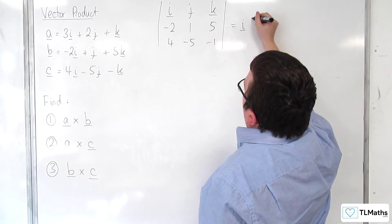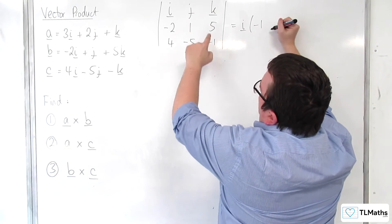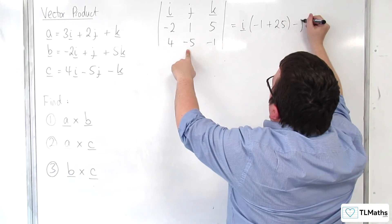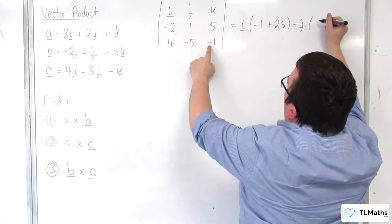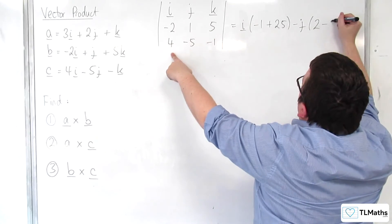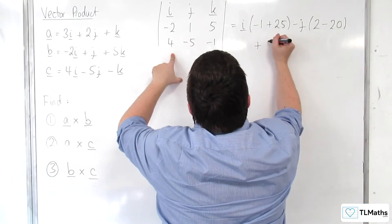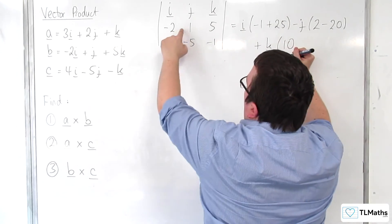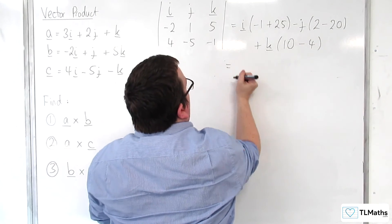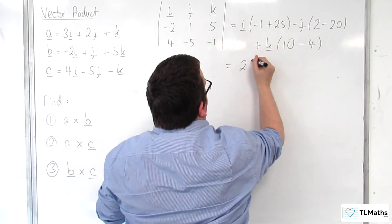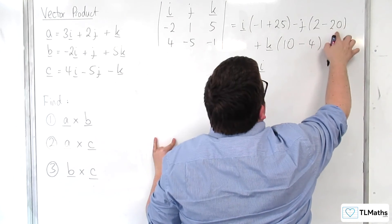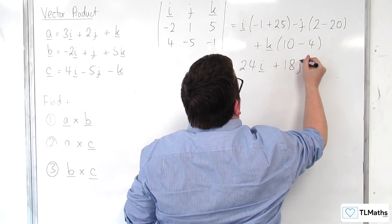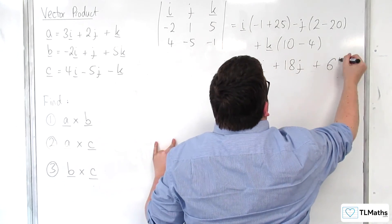So we've got I times 1 times minus 1, take away 5 times minus 5, so plus 25. Take away J times minus 2 times minus 1, which is 2, take away 5 times 4, so take away 20. Plus K times minus 2 times minus 5, which is 10, take away 1 times 4. So we get 24I, and 2 take away 20 is minus 18 but with the minus sign as well, so plus 18J, and then plus 6K.